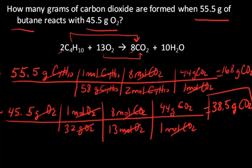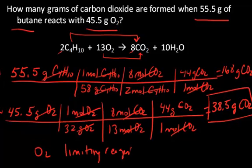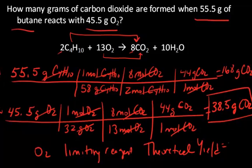Whichever gave me the least amount is the amount I make, therefore the oxygen is the limiting reagent. My theoretical yield, because this is all from calculation, is 38.5 grams of carbon dioxide.